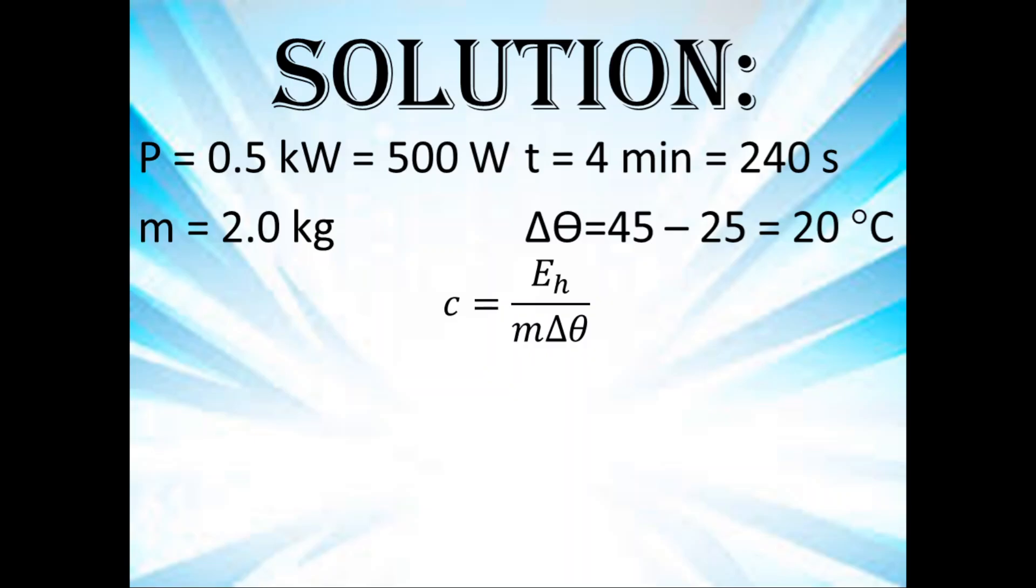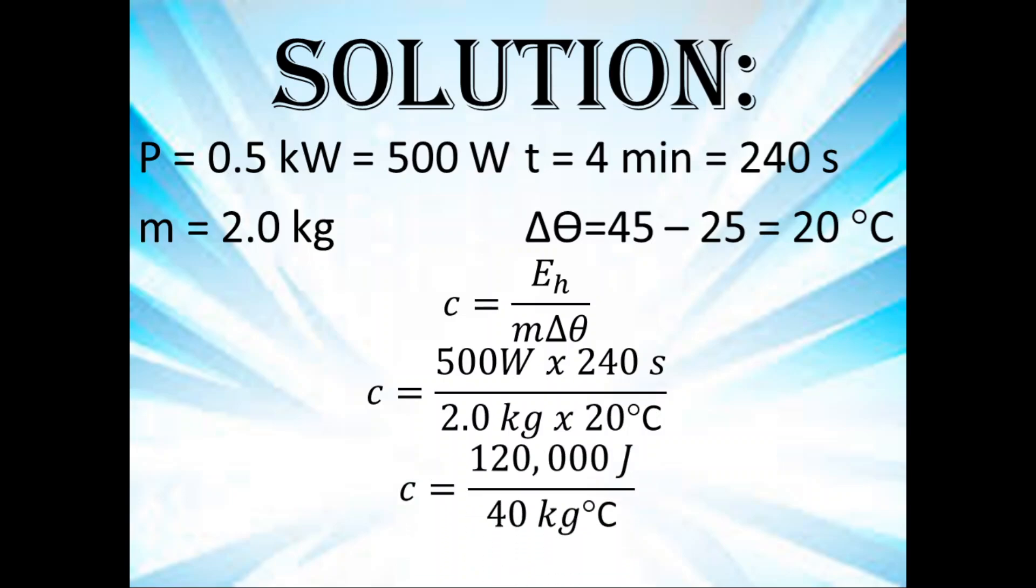Because of the principle of conservation of energy, energy cannot be created nor destroyed. It is only transformed from one form to another. Here this transformation is from electrical energy to heat energy. So 500 watts multiplied by 240 seconds divided by 2.0 kilograms times 20 degrees Celsius.